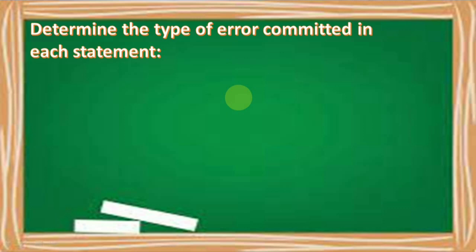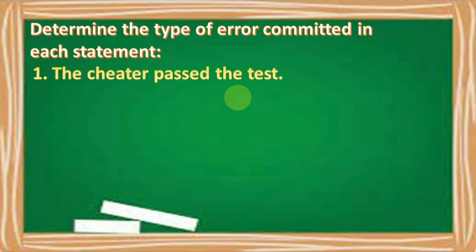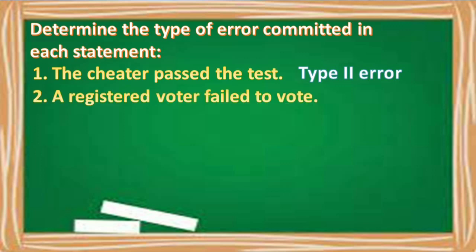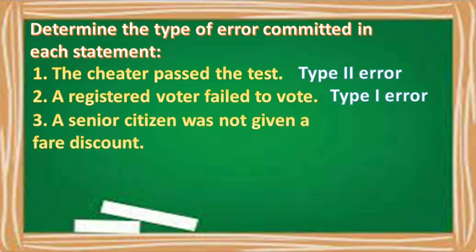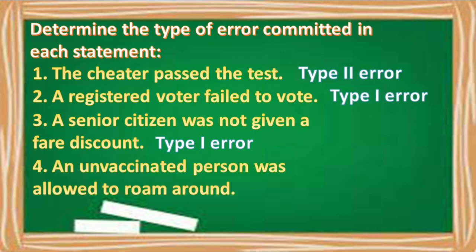Let us once again determine the type of error. Number one: the cheater passed the test — this is a Type 2 error, because the null hypothesis is false but it was accepted. Number two: a registered voter failed to vote — this is a Type 1 error, because the null hypothesis is true but it was rejected. Number three: a senior citizen was not given a fair discount — this is a Type 1 error, because the null hypothesis is true but it was rejected. Number four: an unvaccinated person was allowed to roam around — this is a Type 2 error, because the null hypothesis is false but it was accepted.